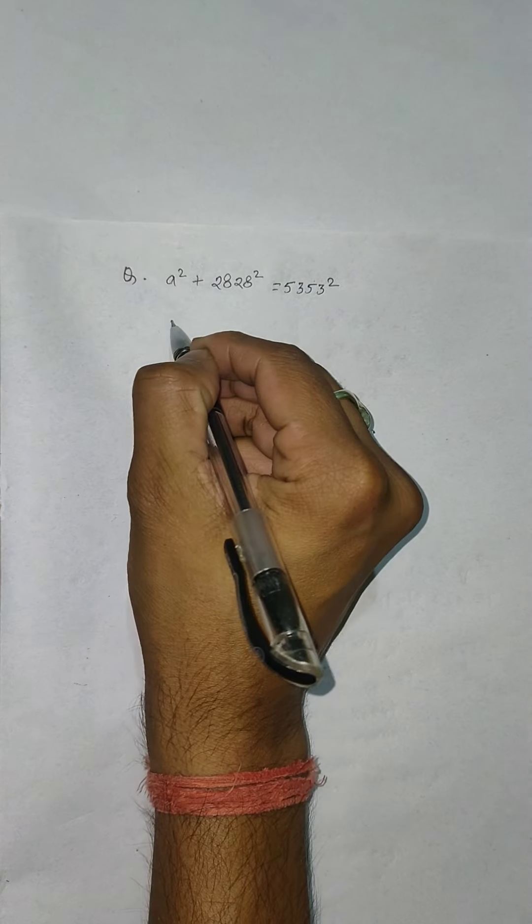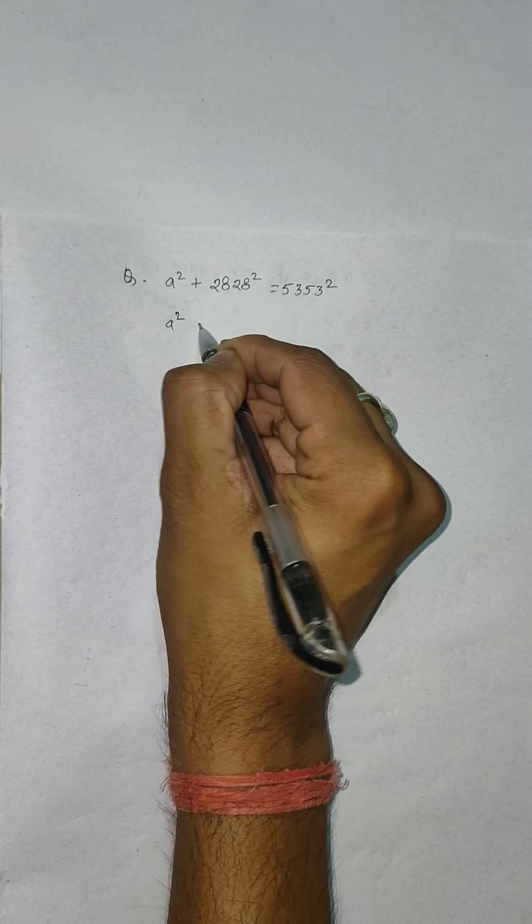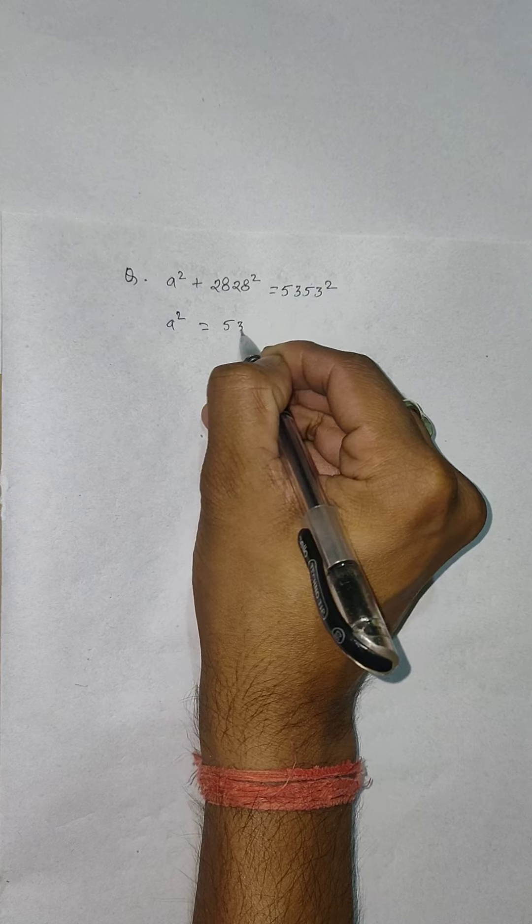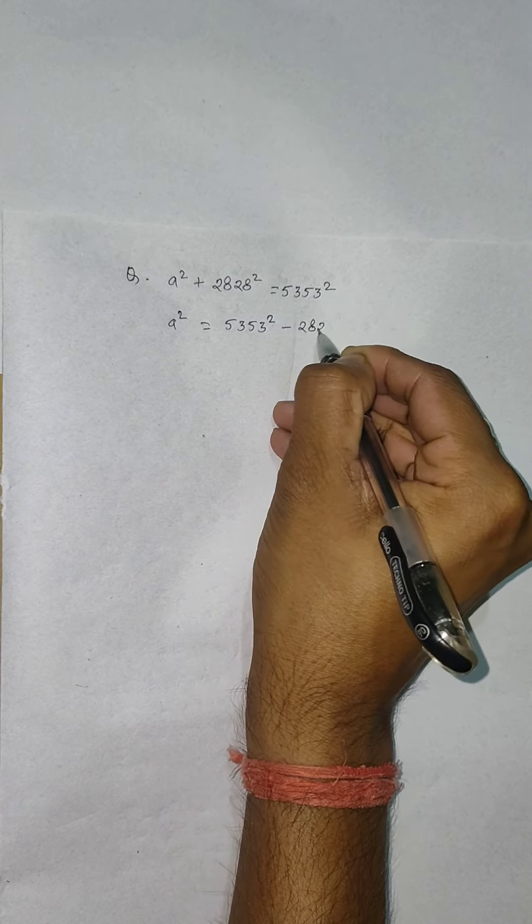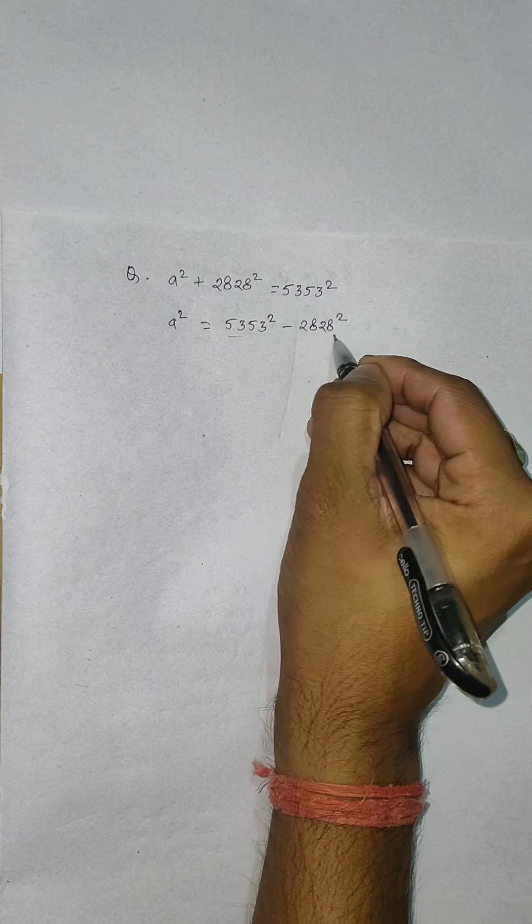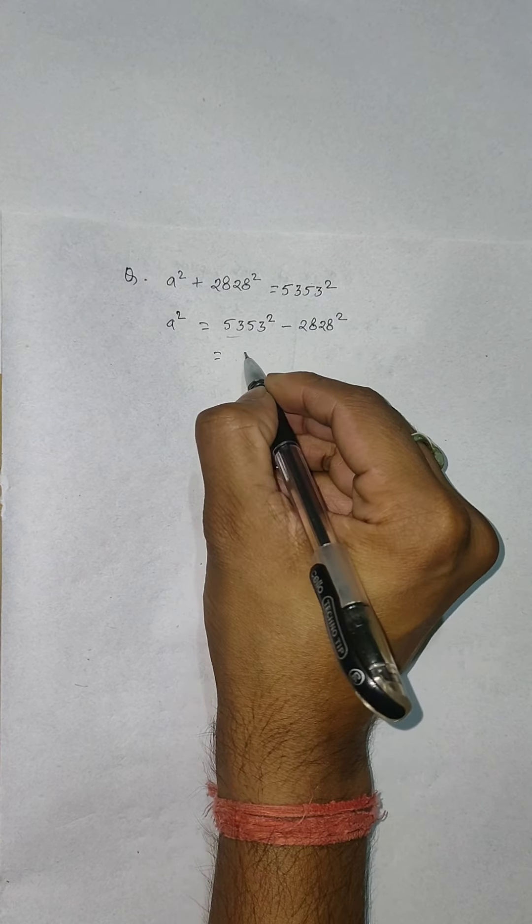Can I write this question as a² = 5353² - 2828²? This is in the form of a² - b², so we can write this as (a - b)(a + b).